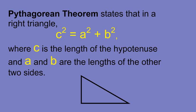This tutorial is going to introduce you to the Pythagorean Theorem and show you a couple of examples using it. Pythagorean Theorem simply states that in a right triangle, c squared equals a squared plus b squared, where c is the length of the hypotenuse and a and b are the length of the other two sides.